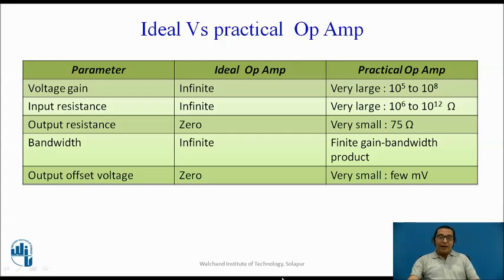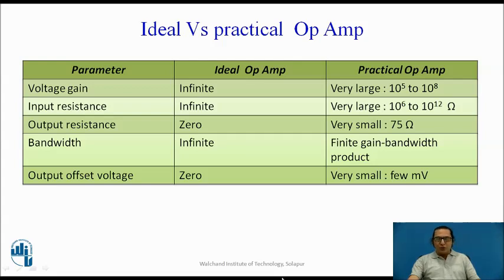The bandwidth of an ideal op-amp is infinite, but practically that is not possible, and a practical op-amp has a finite gain-bandwidth product. Output offset voltage of an ideal op-amp is supposed to be 0, but in case of a practical op-amp, it is not 0, but is of a few millivolts. That is a comparison between an ideal op-amp and a practical op-amp.